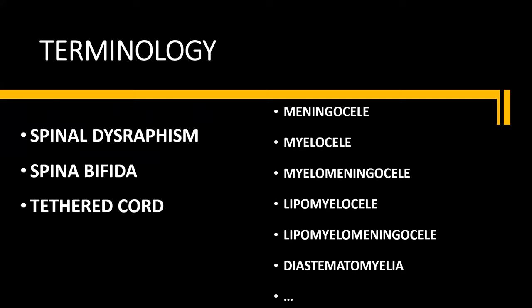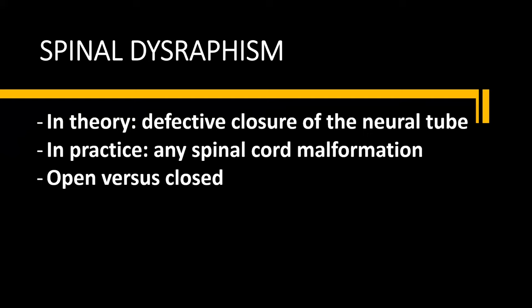Several terms are often used when talking about congenital malformations of the spine: spinal dysraphism, spina bifida, and tethered cord — and they are often used interchangeably despite the fact that they're not really the same and have different meanings. In theory, a spinal dysraphism is any condition caused by defective closure of the neural tube, the embryonic precursor of the spinal cord. In practice, the term is used to refer to any congenital spinal cord malformation, and that is also the way I am going to use it in this video.